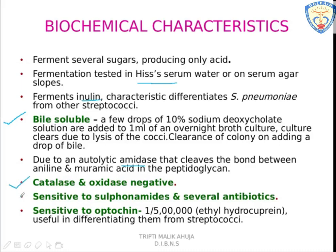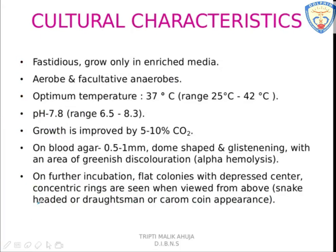The organism is sensitive to sulfonamides and a number of antibiotics. Another characteristic biochemical test is optocin. A 1:25,000 concentration of ethyl hydrocupreine, also called optocin, is used to carry out a sensitivity test. S. pneumoniae is optocin sensitive, while other streptococci are resistant.